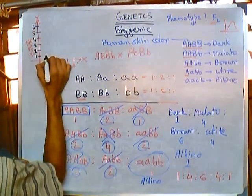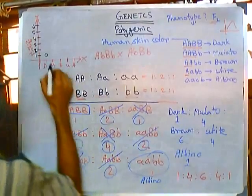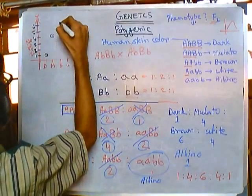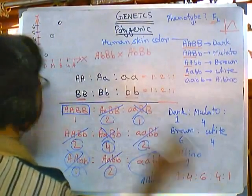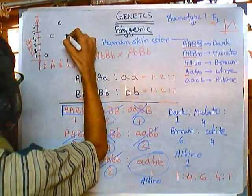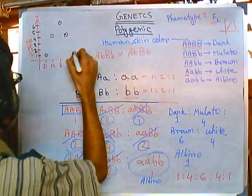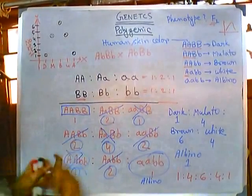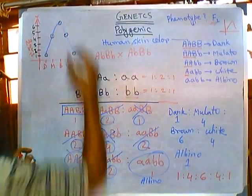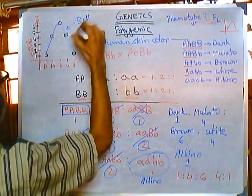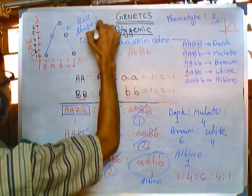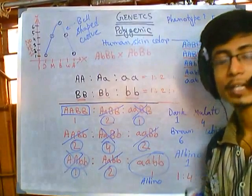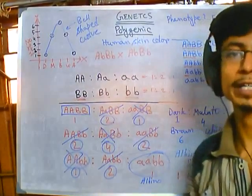You get a bell-shaped curve. Dark is 1, mulatto is 4, brown is 6, white is 4, albino is 1. Plot these points and join them with a curve — you get a beautiful bell-shaped graph. This is the typical characteristic of polygenic inheritance. If you go back to my polygenic inheritance session you can revisit it, but now you know these concepts become easier when you solve problems.